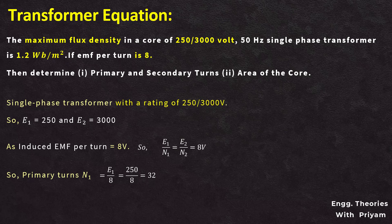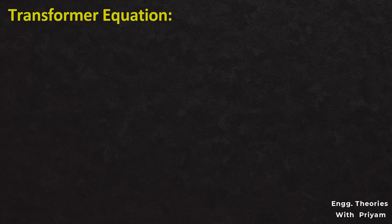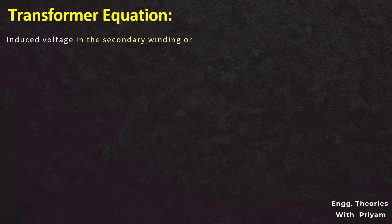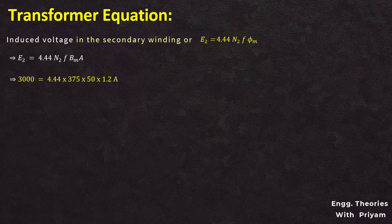Similarly, the number of turns in secondary N2 equals E2 divided by the induced EMF per turn: 3000 by 8, which equals 375 turns. According to the induced voltage formula, E2 equals 4.44 into N2 into f into φm, where maximum flux φm equals Bm into A, with Bm being the flux density and A the area of the core. Putting the values E2 = 3000, N2 = 375, f = 50 Hz, and Bm = 1.2, we can determine the area of the core as 0.03 meter squared.